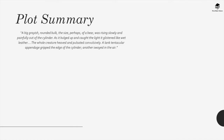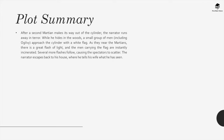The cylinder opens and he gets his first glimpse of the Martians: a big greyish, rounded bulk, the size perhaps of a bear, rising slowly and painfully out of the cylinder. As it bulged up and caught the light, it glistened like wet leather. The whole creature heaved and pulsated convulsively. A lank, tentacular appendage gripped the edge of the cylinder. After a second Martian makes its way out, the narrator runs away in terror. While he hides in the woods, a small group of men including Ogilvy approach the cylinder with a white flag. There is a great flash of light and the men carrying the flag are instantly incinerated. Several more flashes follow, causing the spectators to scatter.